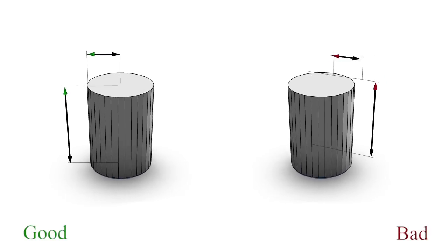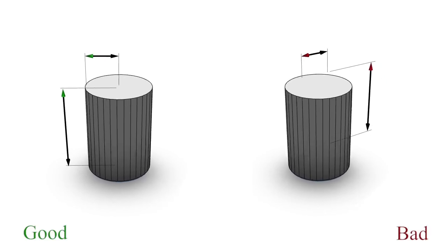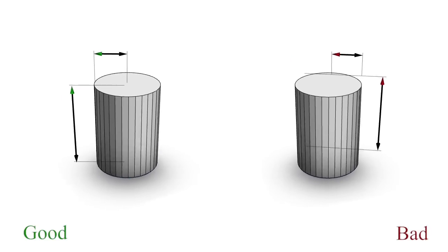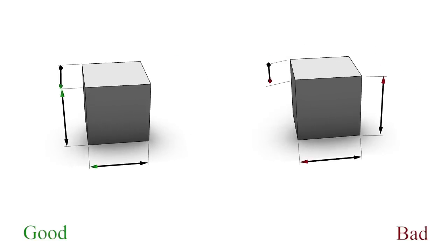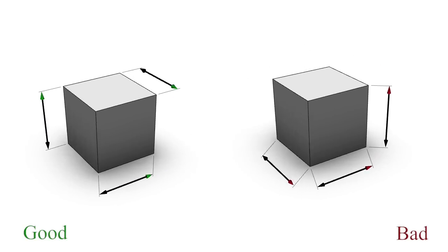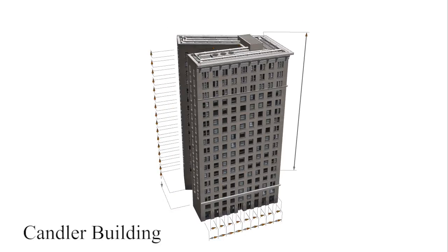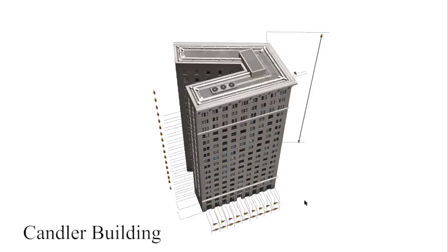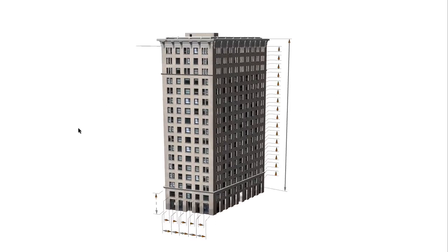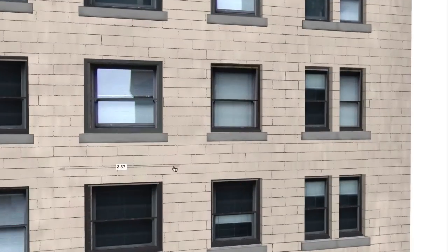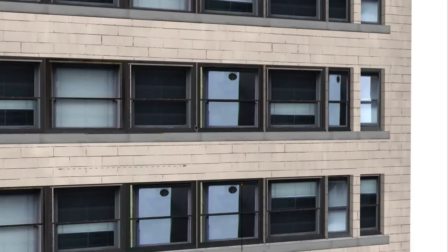Parameters control the movement of dimension lines as the view changes. It is important to align the parameters to the type of geometry they are attached to. Large tiled facades can be controlled using chained dimension lines. When the silhouette isn't visible, we position the final dimension lines inside the silhouette on top of the base lines.